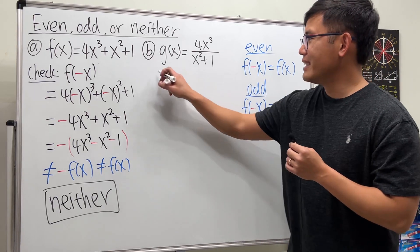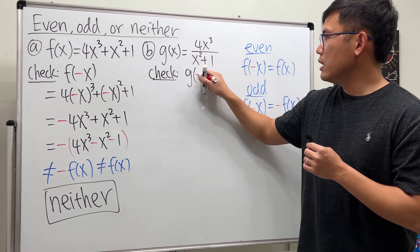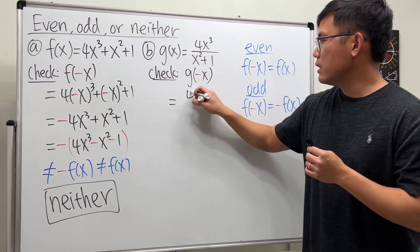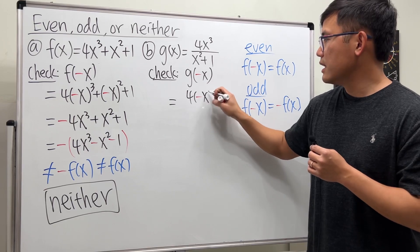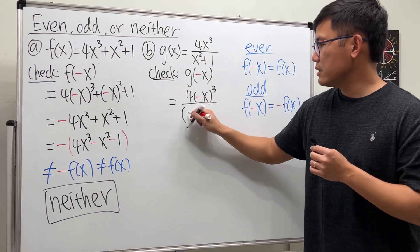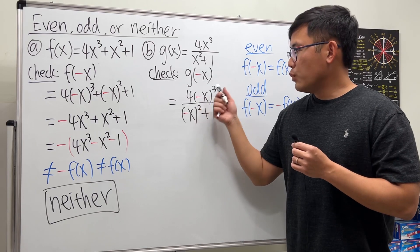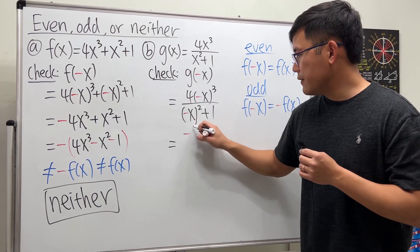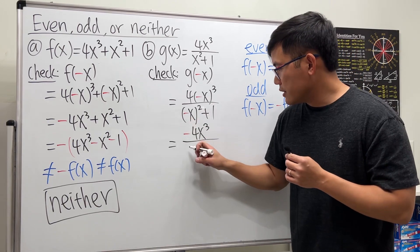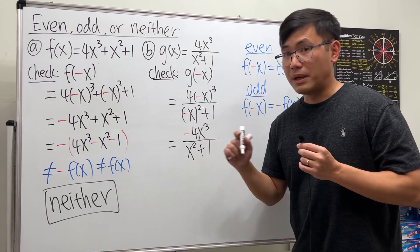We do the same check: we plug in negative x into g. We get 4 times negative x to the third power over negative x squared plus 1. Negative 1 to the third power gives a negative, so we have negative 4x to the third power over x squared plus 1.